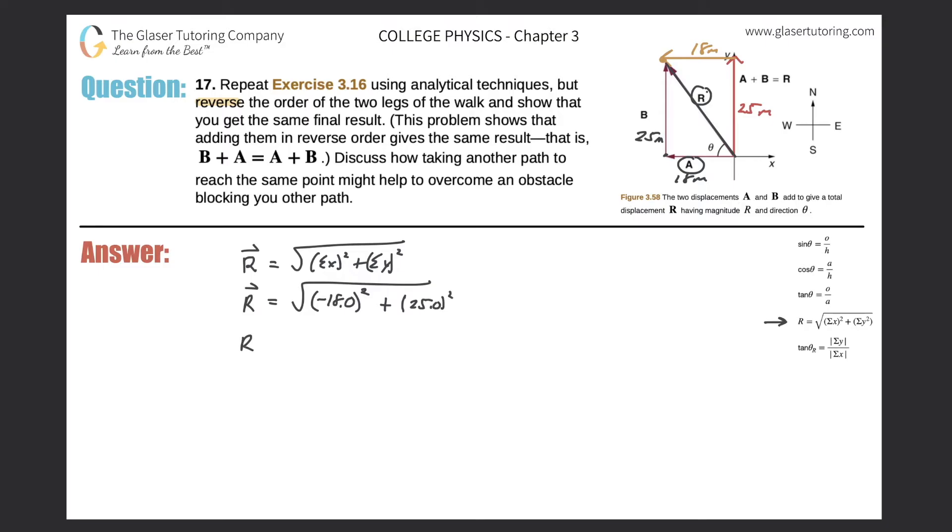Now square them. Okay, so now let's do the calculation: square root of negative 18 squared plus 25 squared. So we get a value of 30.8 meters. Now that value is literally the same value as in problem 16.